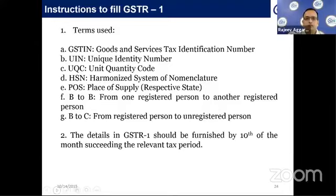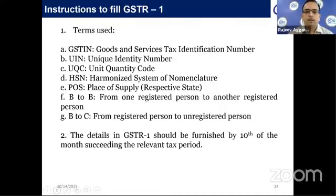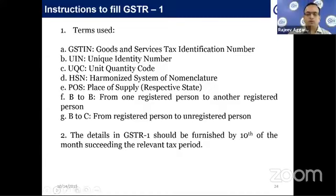Now we move to the instructions to fill GSTR1, covering key abbreviations: GSTIN refers to Goods and Services Tax Identification Number; UIN refers to Unique Identity Number; UQC refers to Unit Quantity Code; HSN refers to Harmonized System of Nomenclature; POS refers to Place of Supply; B2B refers to supplies from a registered person to another registered person; and B2C refers to supplies from a registered person to an unregistered person.